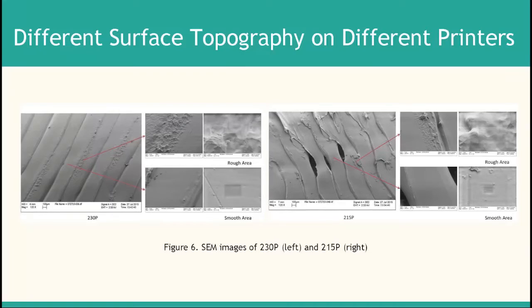Looking at the first set of results comparing the two printers, the SEM images show that on the left, the 230P filaments are very well fused with no holes. For the 215P, however, the filaments are not well fused and there seem to be many holes. This is best explained by the extrusion temperature, as the lower temperature of 215P was probably not high enough for the filaments to melt sufficiently and fuse into one fluent layer as in 230P.